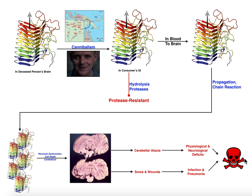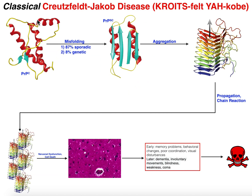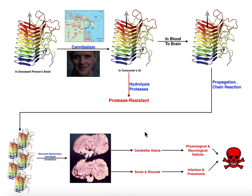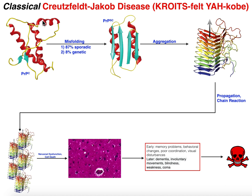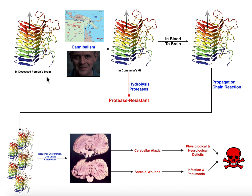Unfortunately, just like classical Creutzfeldt-Jakob disease, Kuru has no cure, is not reversible, and will ultimately be fatal. The disease is very similar to and has a lot of overlap with classical CJD, but in the end it's caused by consumption of prion protein aggregates from the brain of a previously affected person.